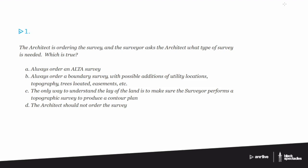But B isn't right either. So C, the only way to understand the lay of the land is to make sure the surveyor performs a topographic survey to produce a contour plan. Well that's certainly true but it's not really the essence of the question. So the answer is going to be D.